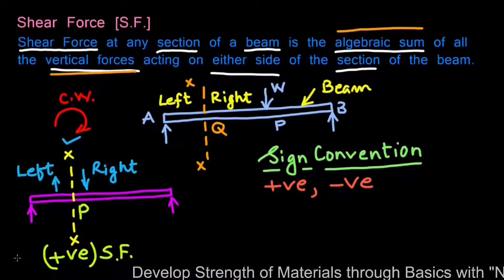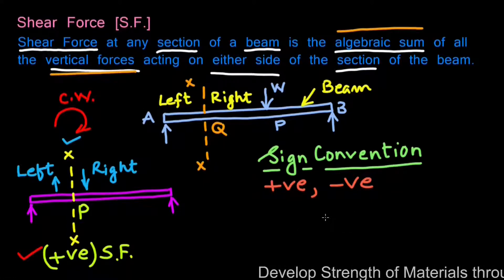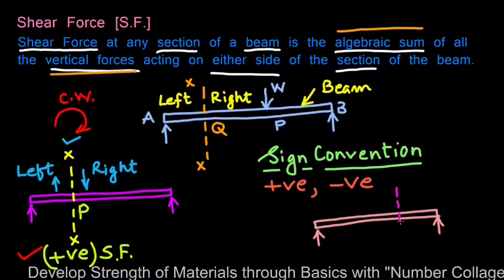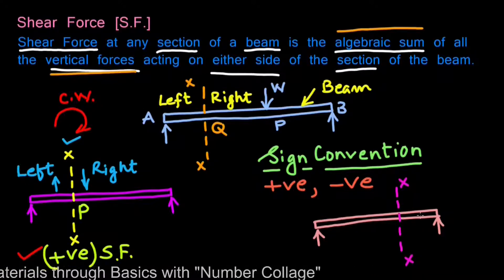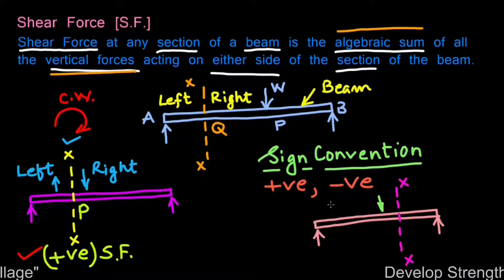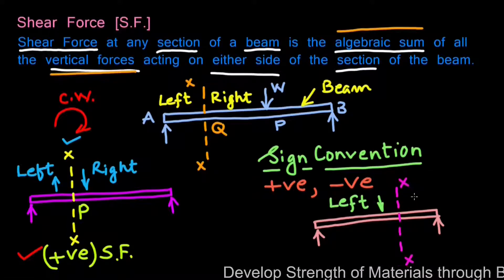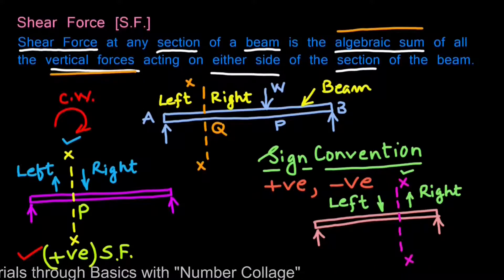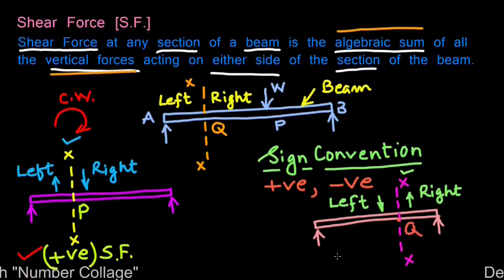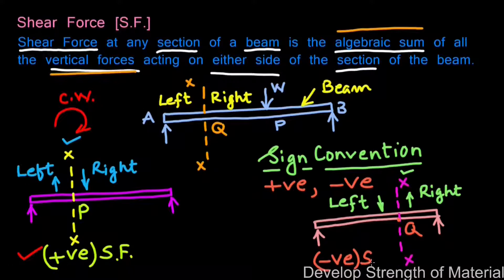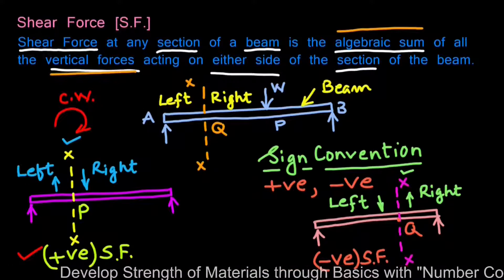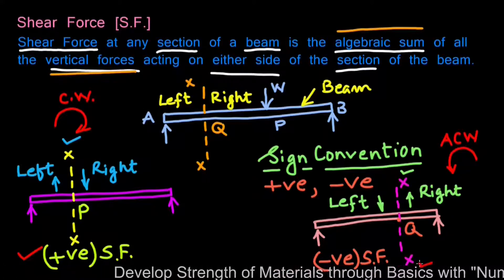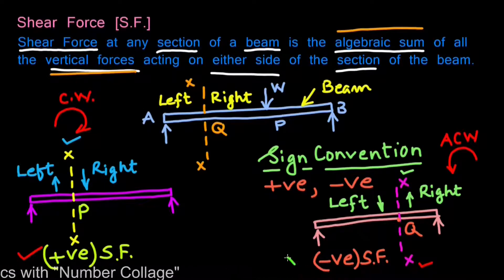On the other hand, if the unbalanced vertical force is in the downward direction to the left of section XX and upward to the right of section XX, then the shear force at that point Q is considered to be negative shear force. This negative shear force can be looked upon as giving an anti-clockwise moment about section XX.